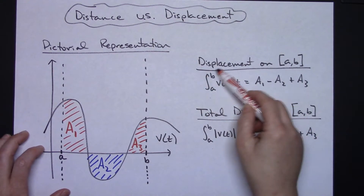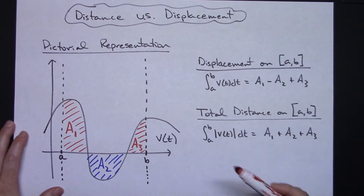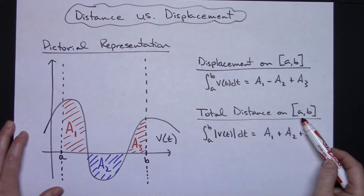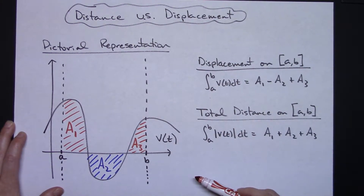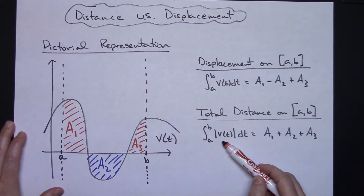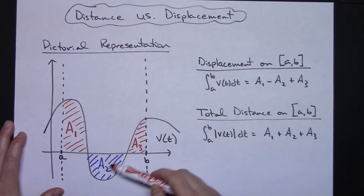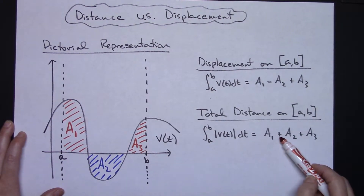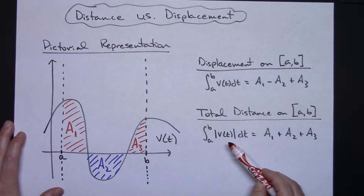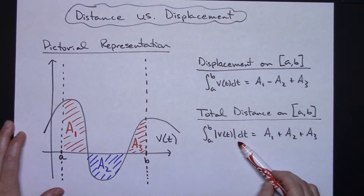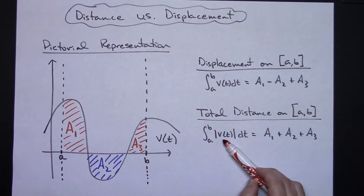It's going to do it automatically. You could put this directly into your calculator and allow it to integrate that velocity function. Now, on the other hand, if you're trying to find the total distance on a to b, then you're going to have to integrate the absolute value of that velocity function. Your calculator would do this automatically, but you want to add all the total areas up. Since the negative section would be subtracted, you need to add it.